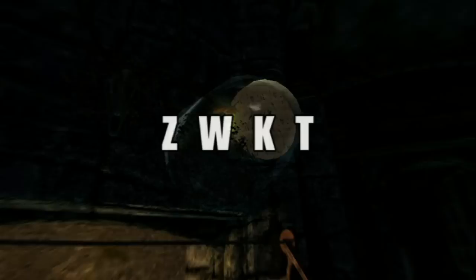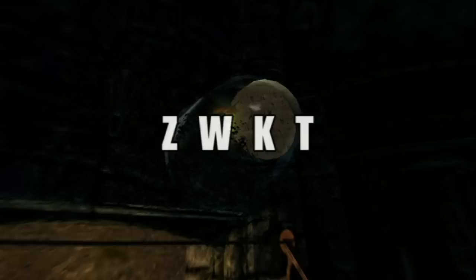But underneath the stopper, it has four letters, ZWKT. Assigning a number to each of those, you know, 1 through 26, we get the number 80. Add those two together, we get 8, which is H.